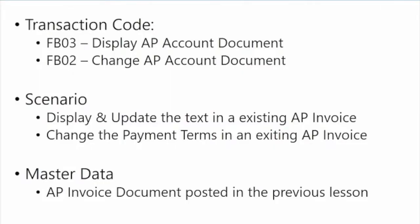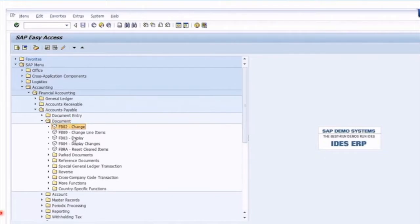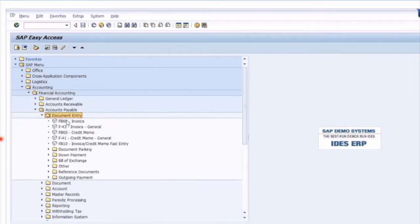Now that we've learned how to enter an invoice, we're going to look at what some of the other options are — for instance, display and change. We're going to look at FB03 for display and FB02 for change. The scenario is if you needed to display and update the text in an invoice, or change the payment terms for an AP invoice. I'm going to enter a new fresh invoice so we can then display, change, and reverse it without interrupting the previous test.